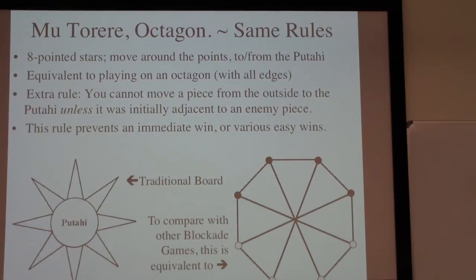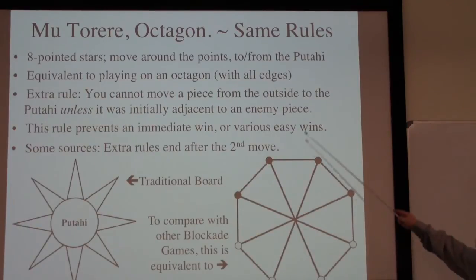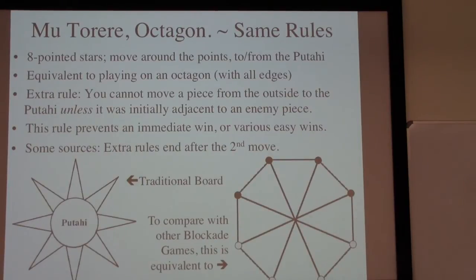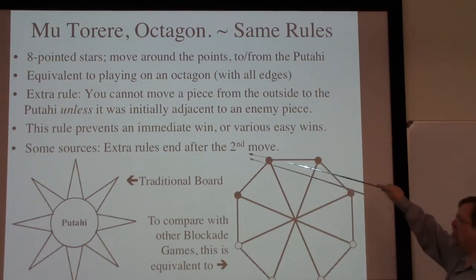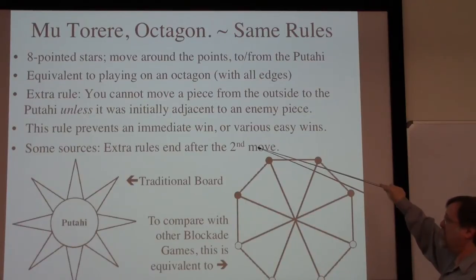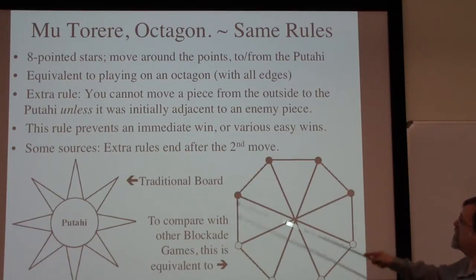This piece can move into the center because it's adjacent to an enemy; this piece can move into the center because it's adjacent to an enemy. Because there's a vertical symmetry in the board, those two moves are the same. So for the very first move there really is only one option. As I say, this prevents an immediate win and also prevents various other kinds of easy wins. There are some sources that say this extra rule expires after say the first two moves, but the instructions from the national museum in Christchurch, New Zealand say that rule goes on forever. There are some slight variations in terms of the details, but for now I'm going to assume that rule stays in place all the way through, which just makes the game chart a little bit easier.